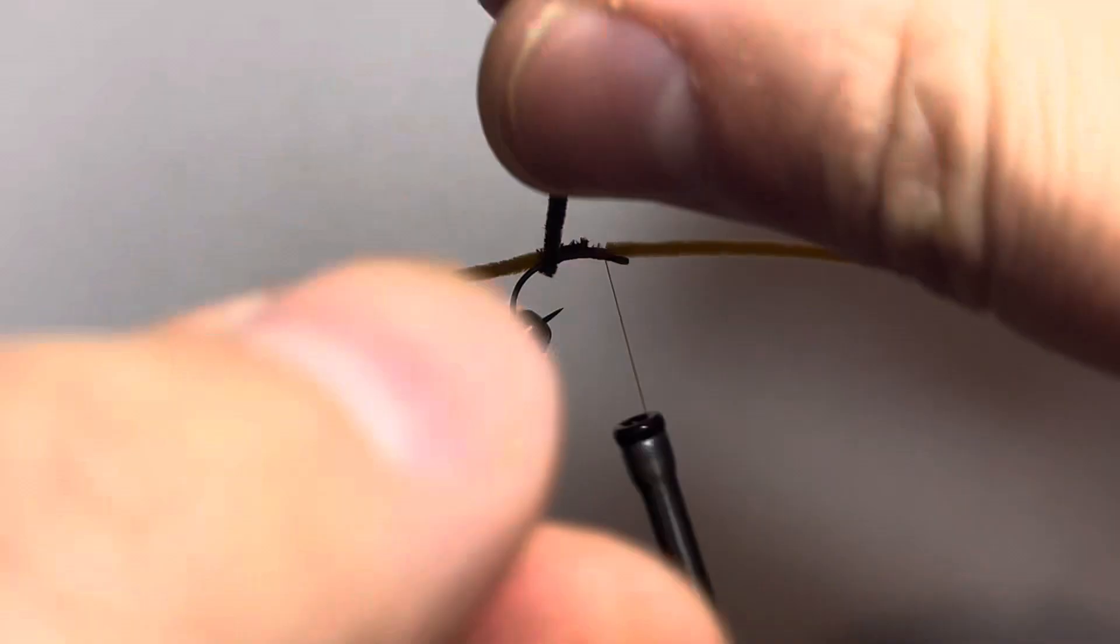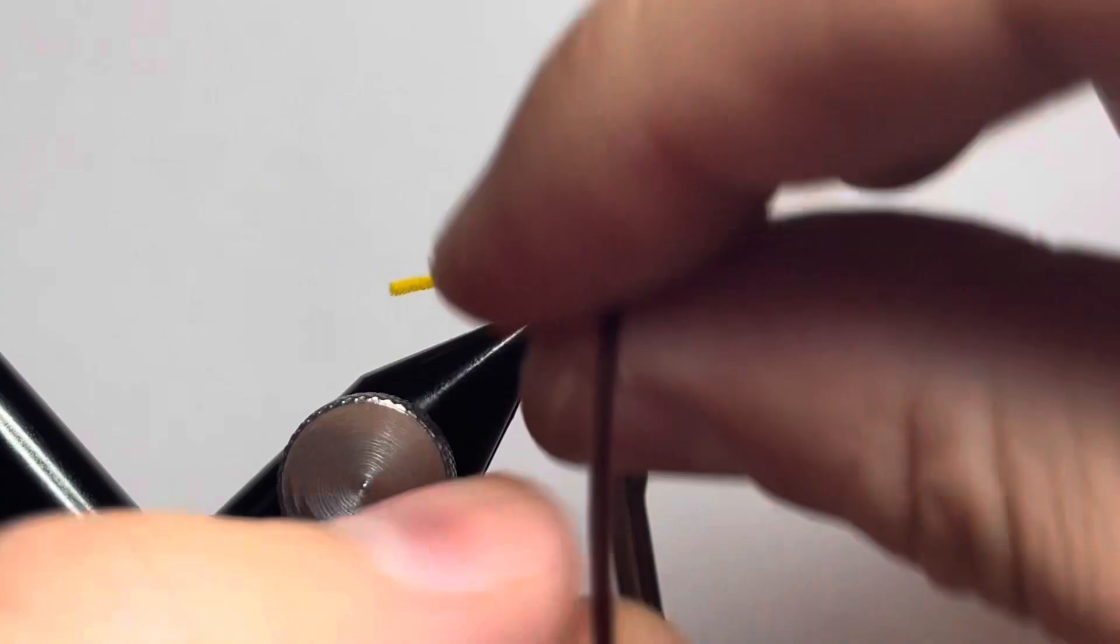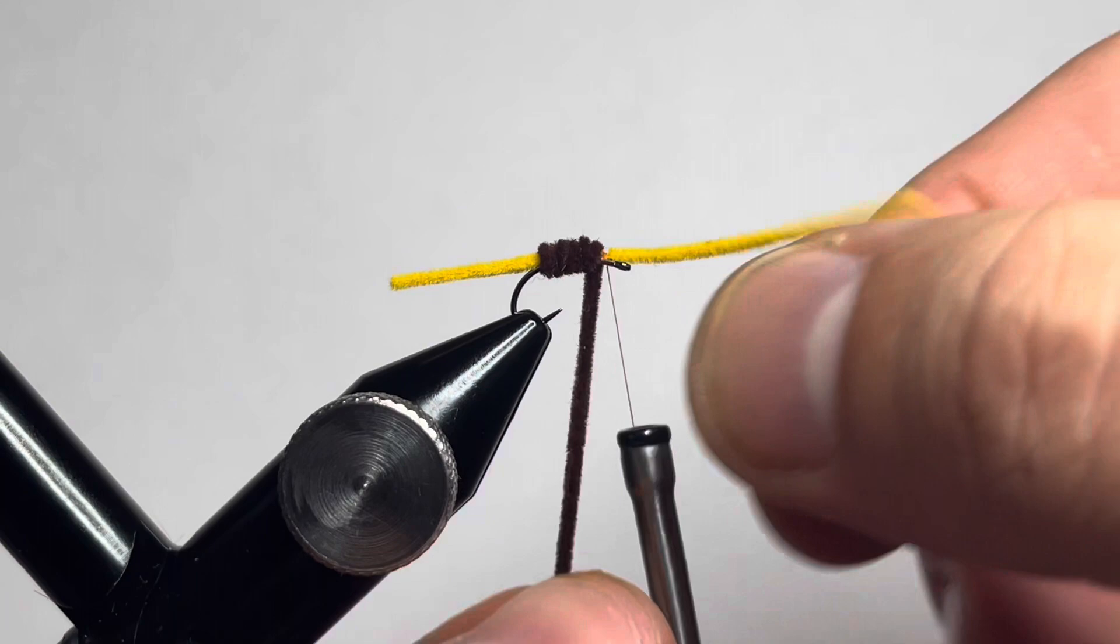We're gonna work our thread back up to our wrap-off point. Now we're just gonna do some tight touching wraps of this second color of suede chenille. It takes on this specific hook about six wraps to get all the way to our tying point.